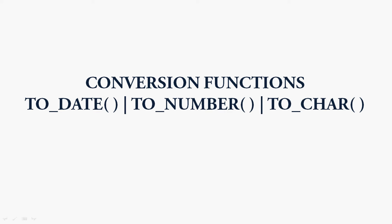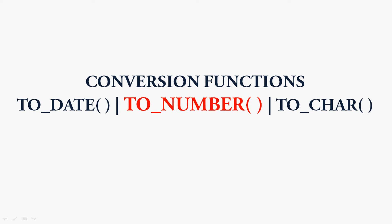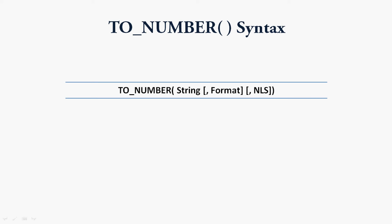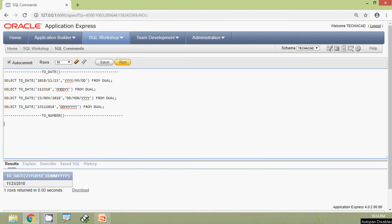Now we will go to the next conversion function, that is TO_NUMBER. This function TO_NUMBER converts a string to a number. Here we can see the syntax: TO_NUMBER of string, then two optional parameters — first one is format and second one is NLS, that is native language support. We will see some examples using this conversion function TO_NUMBER.